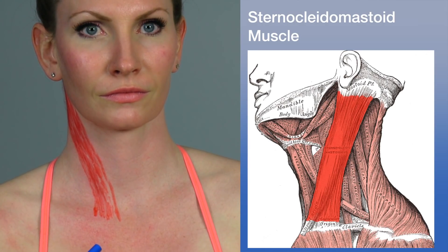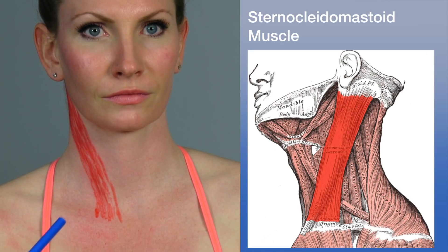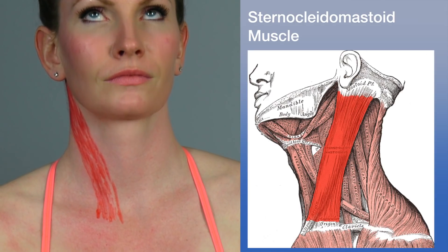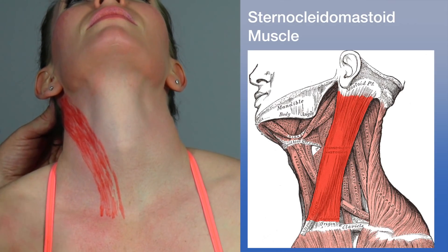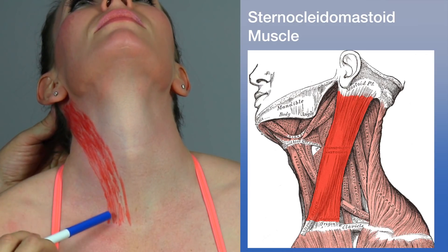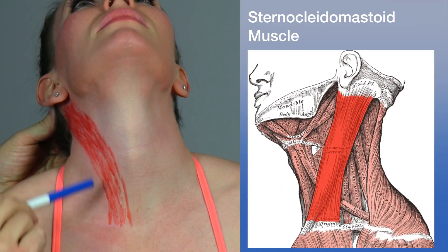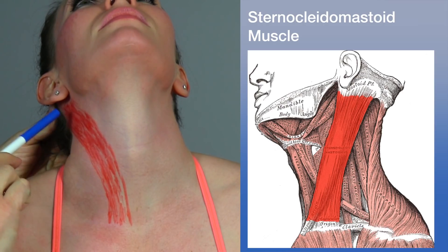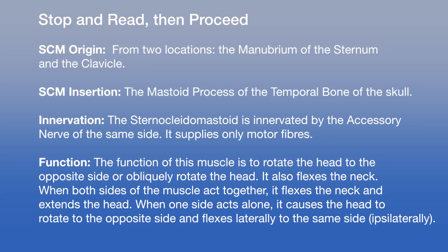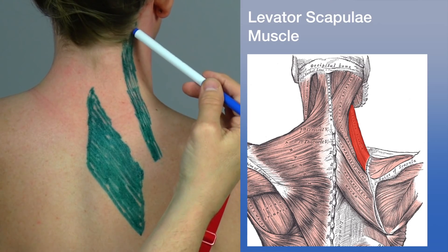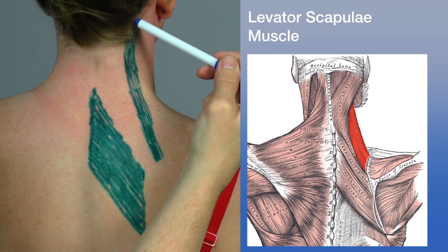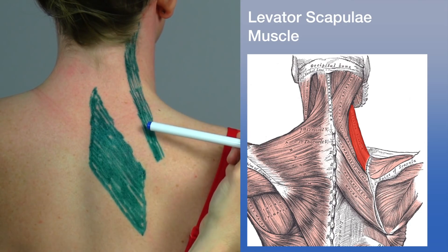Bilateral contraction of the sternocleidomastoid produces an accentuated cervical lordosis — you can see the curvature of the muscle, which helps increase the curvature of the cervical spine. The next muscle is the levator scapulae, outlined here in green.